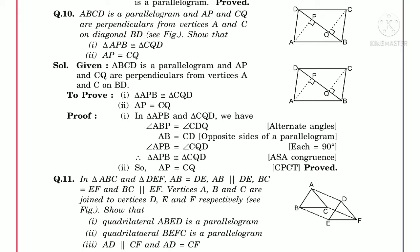The first question, question number 10: ABCD is a parallelogram and AP and CQ are perpendiculars from vertices A and C on diagonal BD. We need to prove triangle APB congruent to triangle CQD, and secondly that AP equals CQ. As you see the figure, from A and from C we draw perpendiculars on BD, and the points are P and Q respectively.